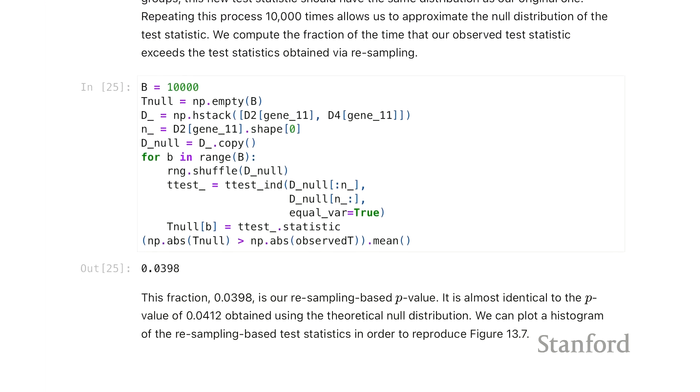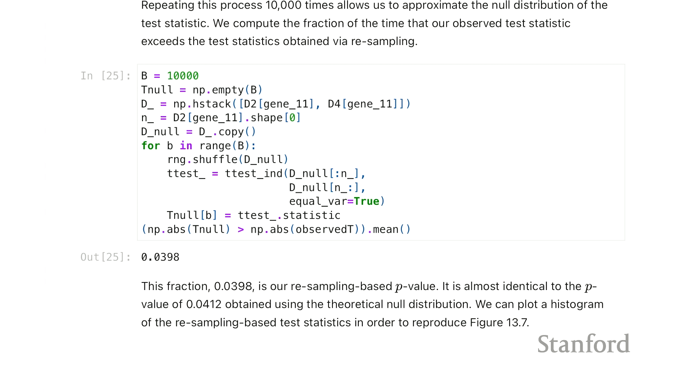So the basis of this resampling procedure is we assume the null hypothesis is true. That is, the y equals two group for gene 11 is basically the same in distribution as the y equals four group in gene 11. So then we randomly reassign the data in group two to the data in group four, keeping the sample size in group two and group four the same, and then we recompute our t-statistic.